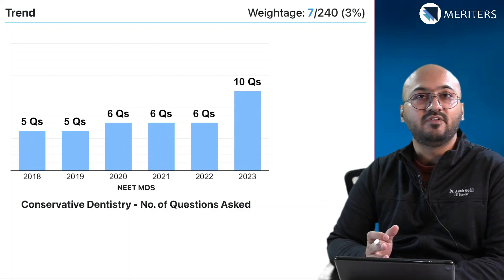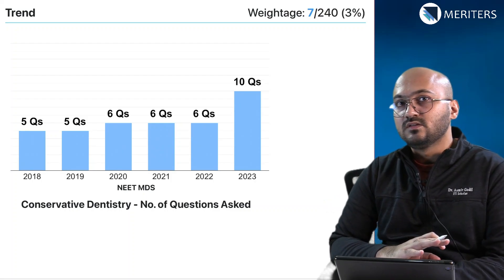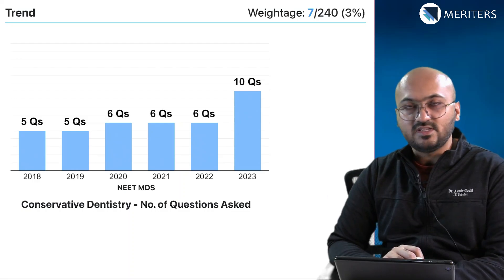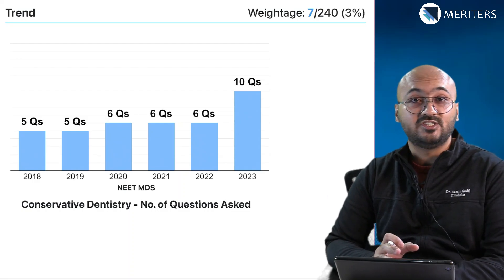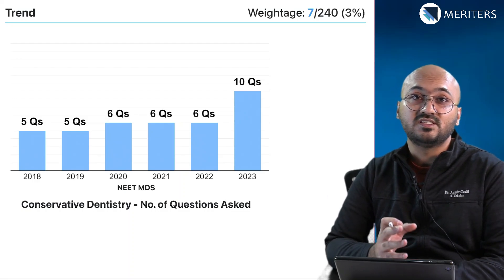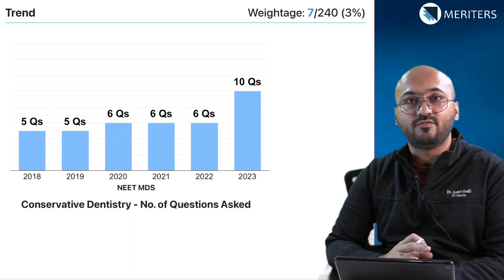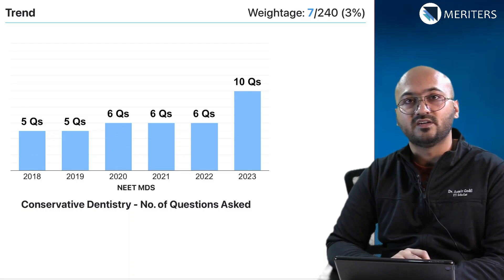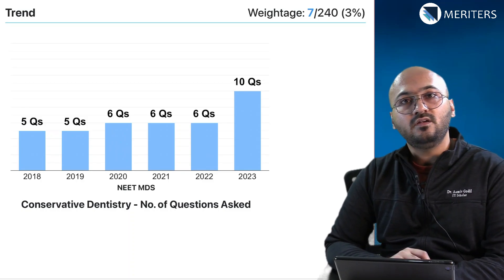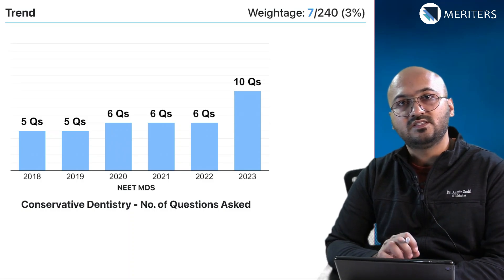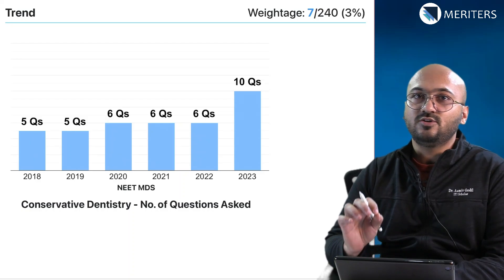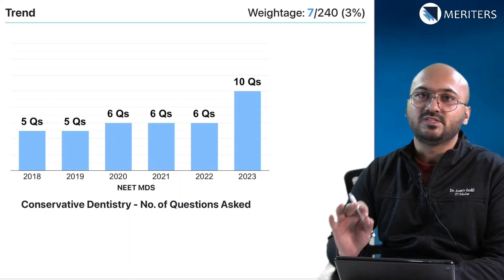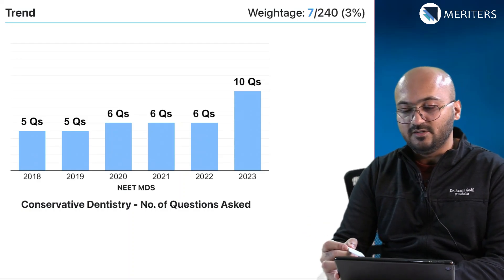The trend has been very consistent with regards to conservative dentistry, and last year we had 10 questions from cons, which is a very easy way to score like 40 marks if you are prepared with this subject. In my opinion, cons is an easy subject and you should definitely give all your hundred percent to this particular subject.